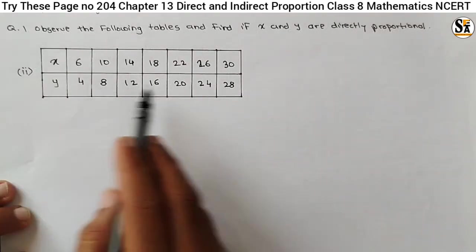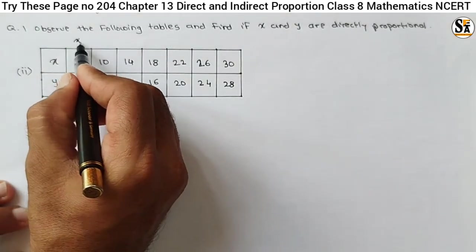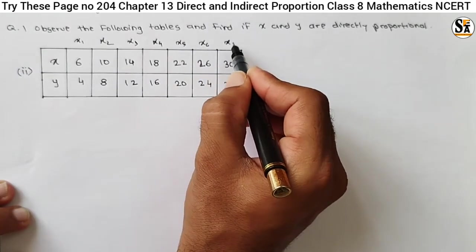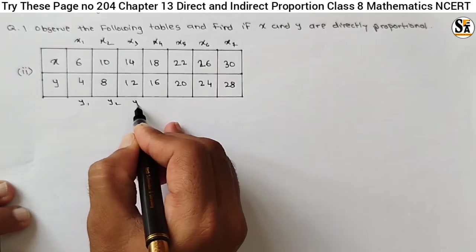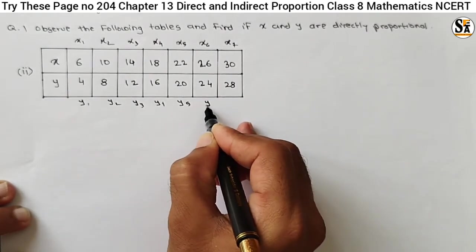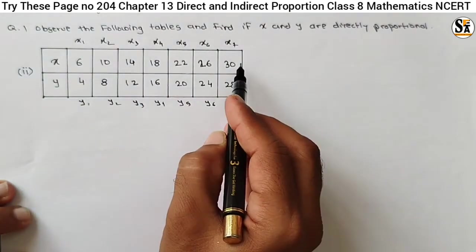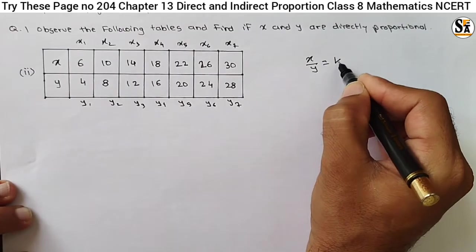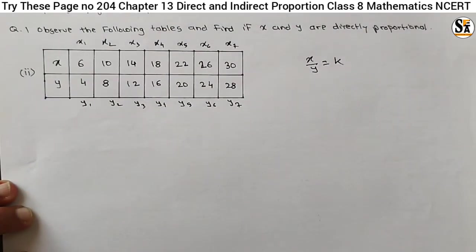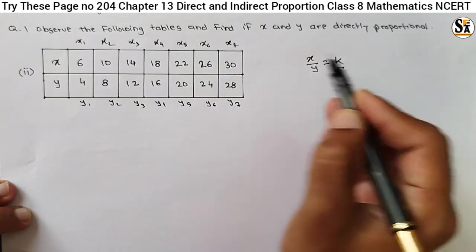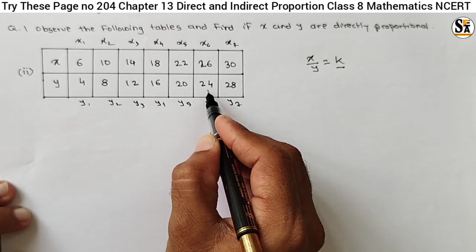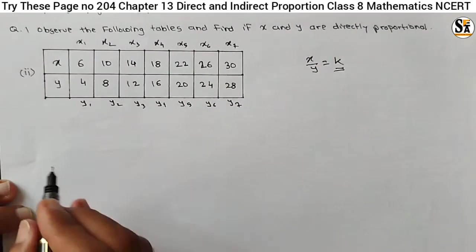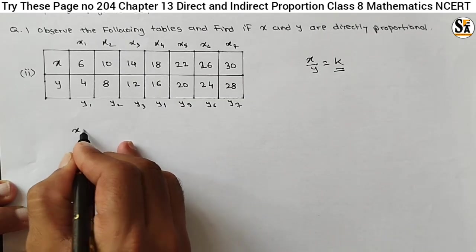Now see the second table. Here also, let's write x1, x2, x3, x4, x5, x6, x7 and corresponding values y1, y2, y3, y4, y5, y6, y7. So for 7 values of x there are corresponding 7 values of y. What is our basic condition? x upon y must be constant for different values of x. So x1 upon y1 must equal x6 upon y6 and so on. Let's try to find out whether x and y are directly proportional. Our procedure: take the ratio x1 upon y1.